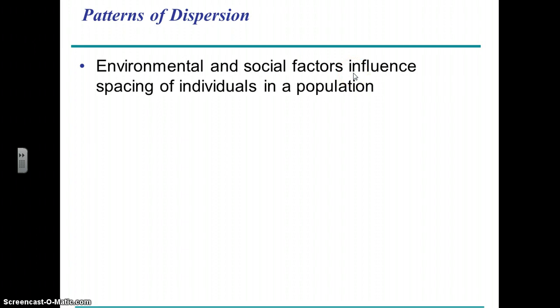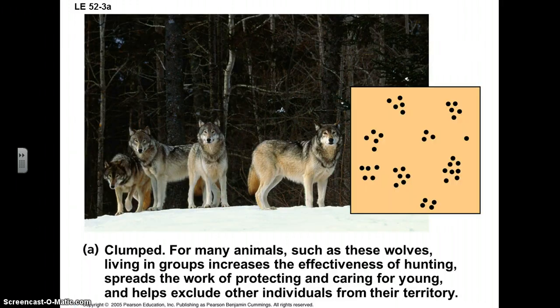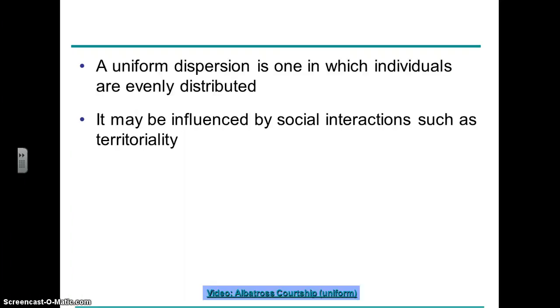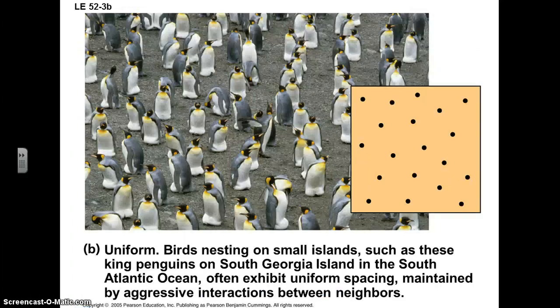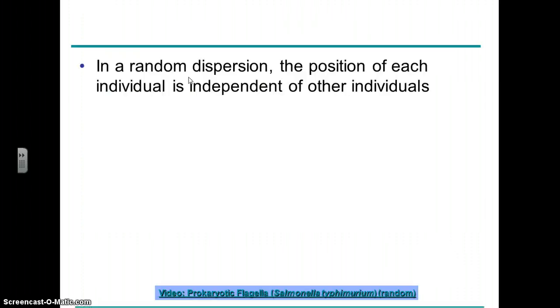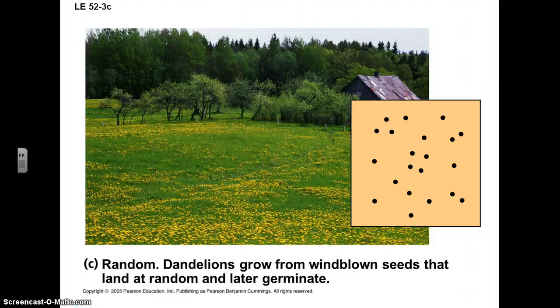Dispersion can come in several flavors. They can be clumped across the landscape, have a relatively uniform distribution across the landscape — like these nesting penguins — or it can be relatively random.